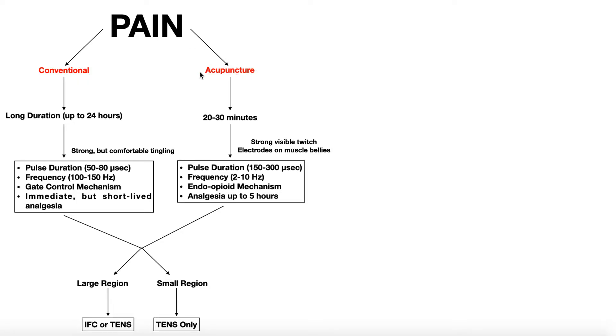The acupuncture setting is more intense, and it can only be used up to a max of 30 minutes, so a typical treatment duration for the acupuncture setting is about 20 to 30 minutes. If the acupuncture setting can only be used up to 30 minutes, what's the advantage of using the acupuncture setting when the conventional setting can be used up to 24 hours?